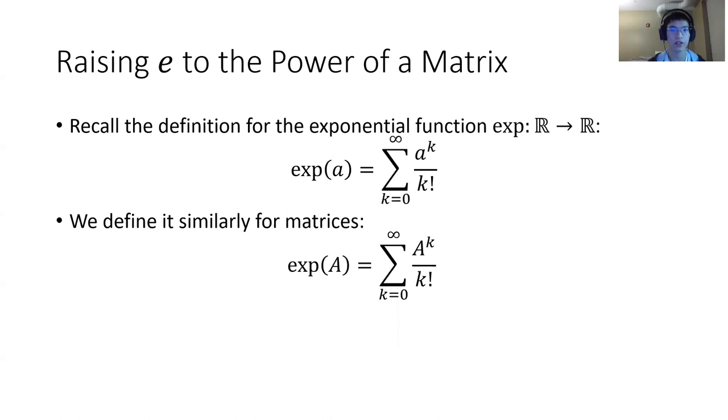Let's first recall the definition of the exponential function. Exponential function maps from R to R typically. The exponential of a is equal to the summation of a to the power of k over factorial k from k equal to 0 to infinity. So the exponential function for matrices is defined in the same way. Notice that we have to calculate a to the power of k, which requires some technique.